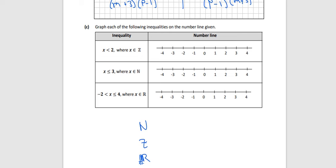Right, so the first one, x is less than 2 and it's an element of Z. So that means it could be a negative whole number. So it's less than 2. If it's less than 2, it can't be 2. So it has to be 1, 0, it can be minus 1, it can be minus 2, it can be minus 3, or it can be minus 4 and so on.